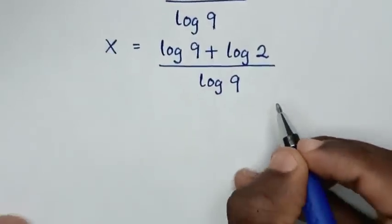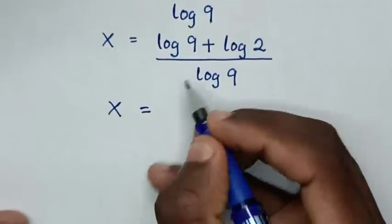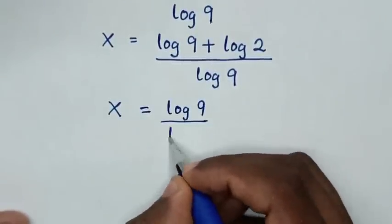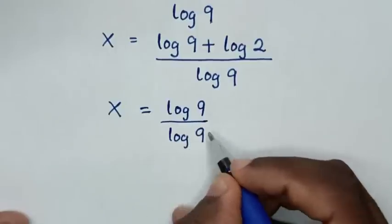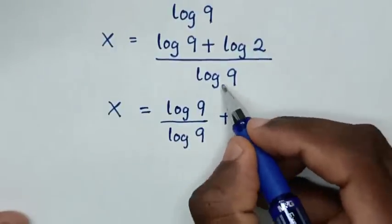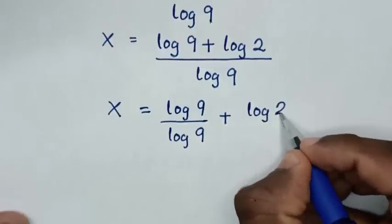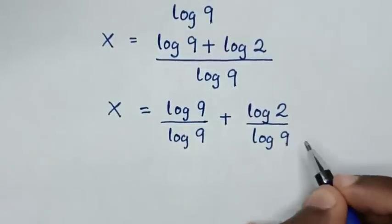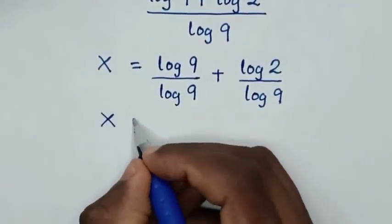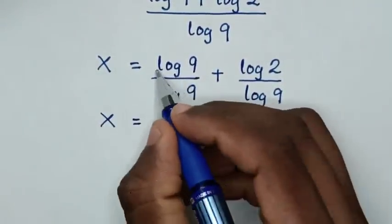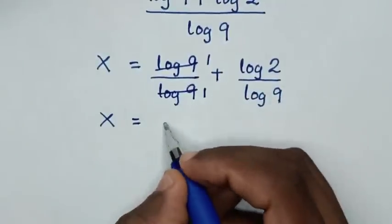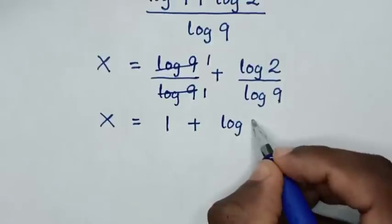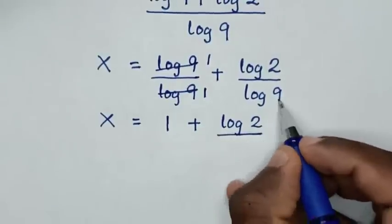Then in the next step, it will be x is equal to log of 9 over log of 9, plus log of 2 over log of 9. Then it will be x is equal to 1 plus log of 2 over log of 9.